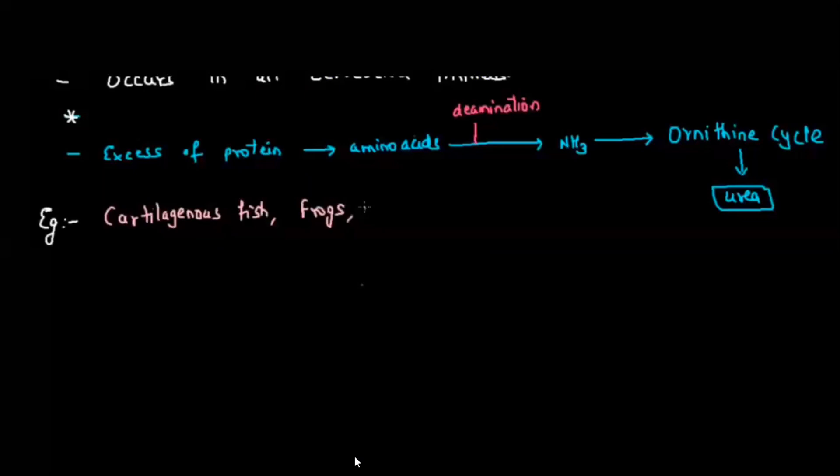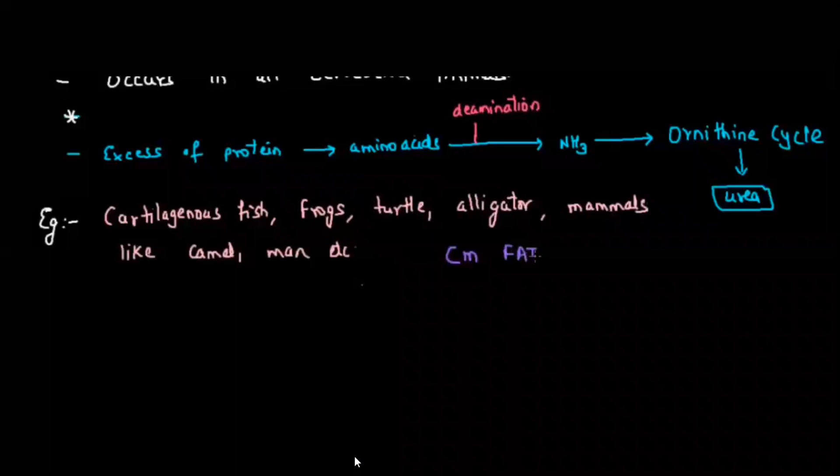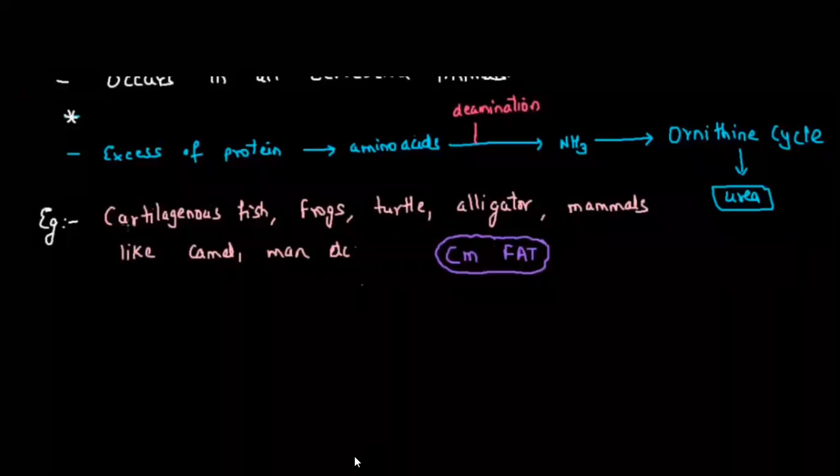Examples of ureotelic animals include cartilaginous fish, frogs, turtles, alligators, and mammals like camel and man. The shortcut to remember is 'CM FAT': C for cartilaginous fish, M for mammal, F for frog, A for alligator, T for turtle.